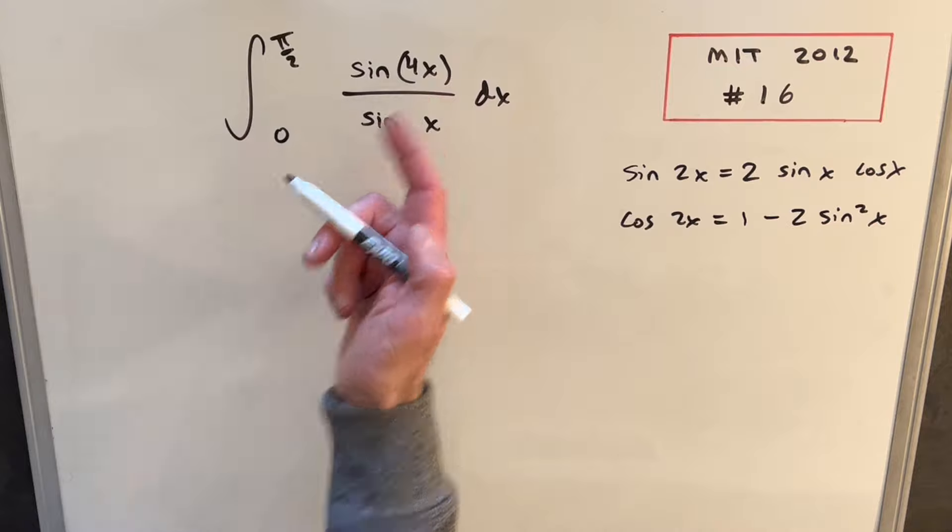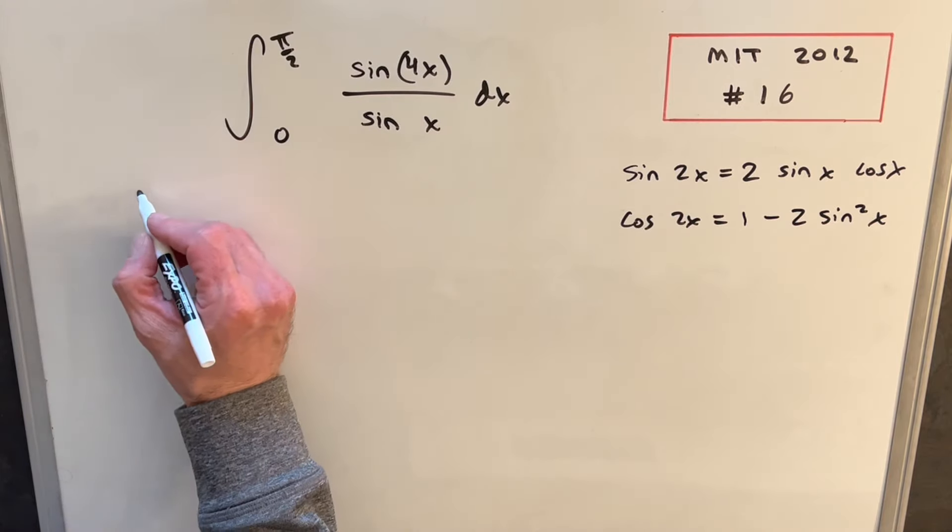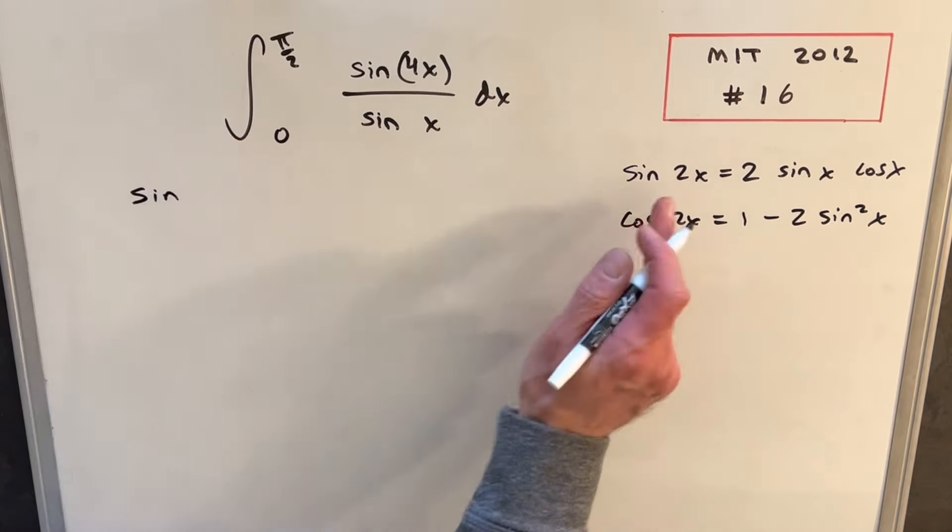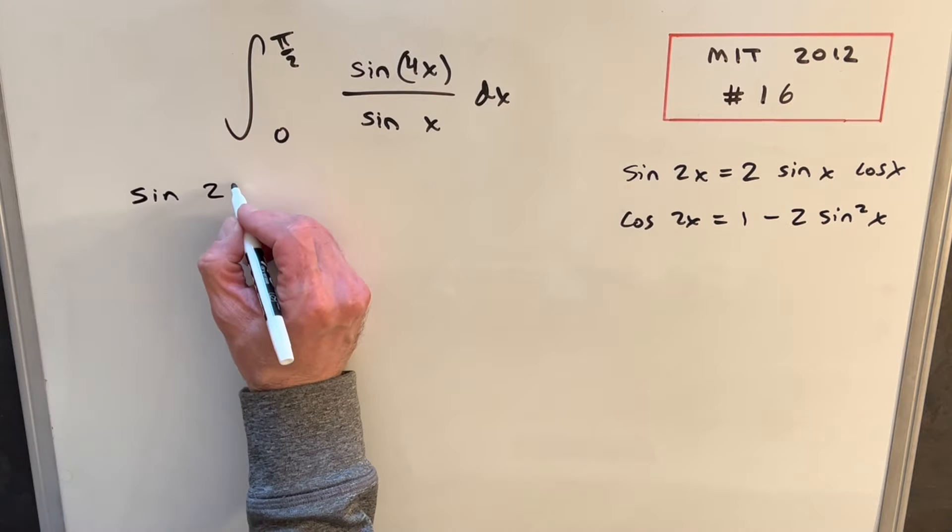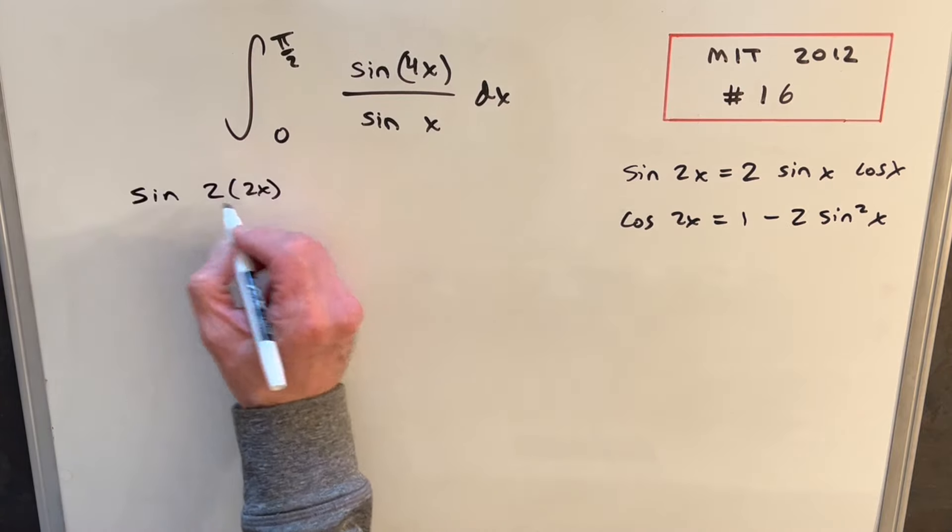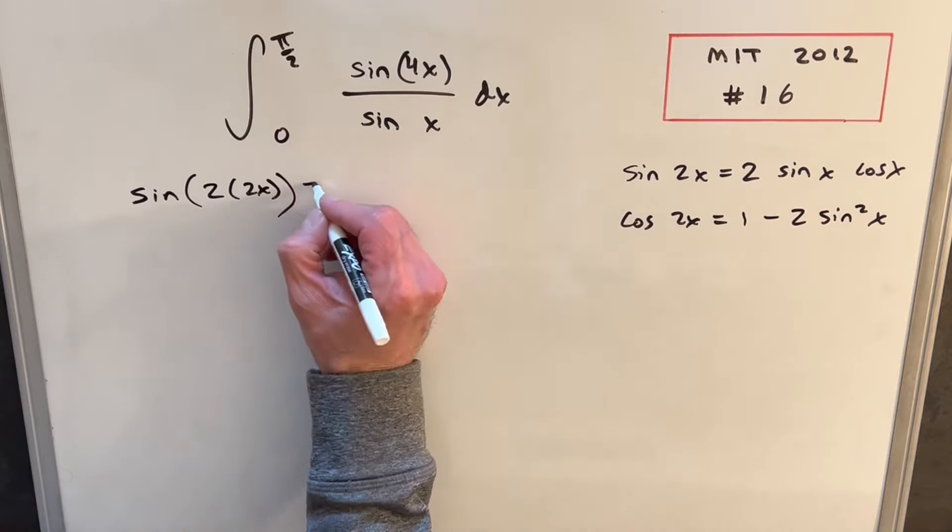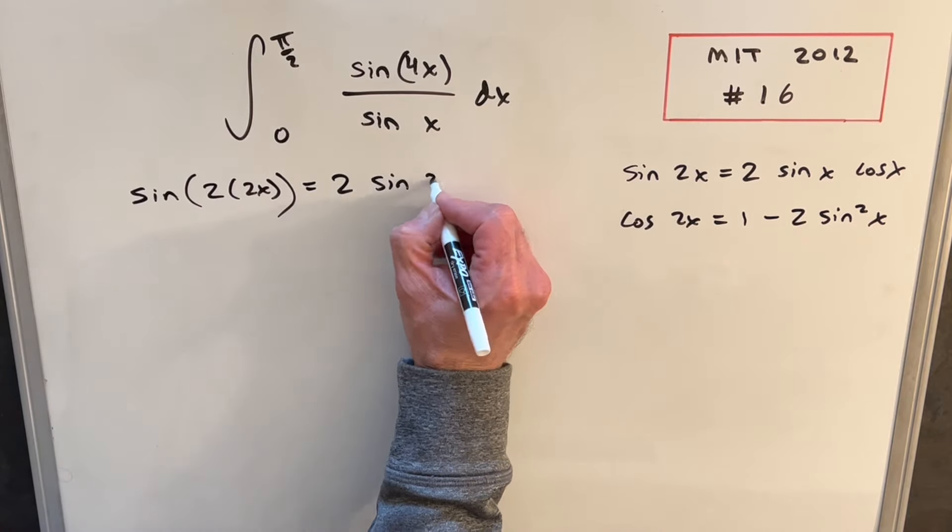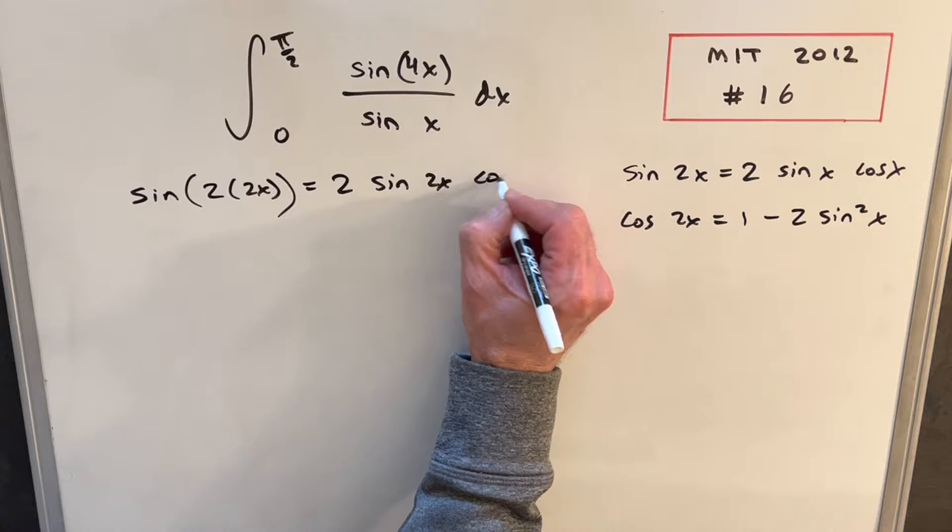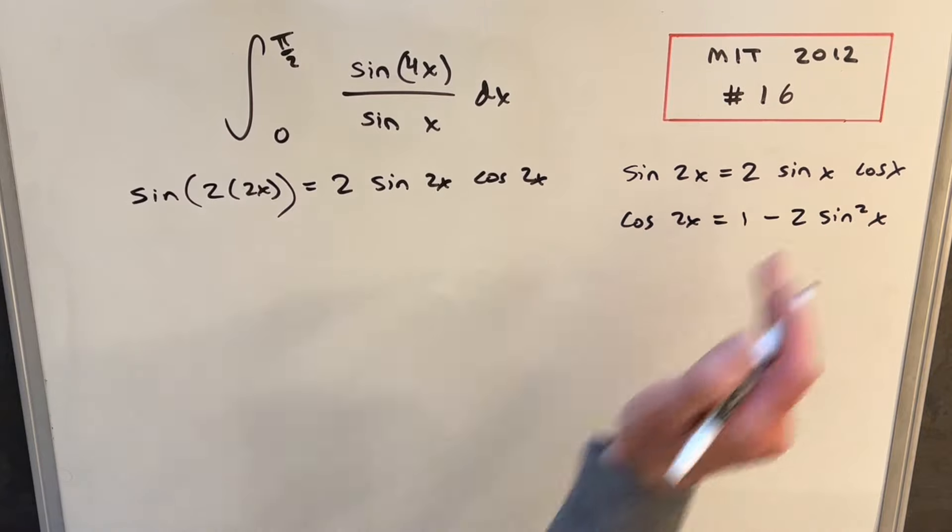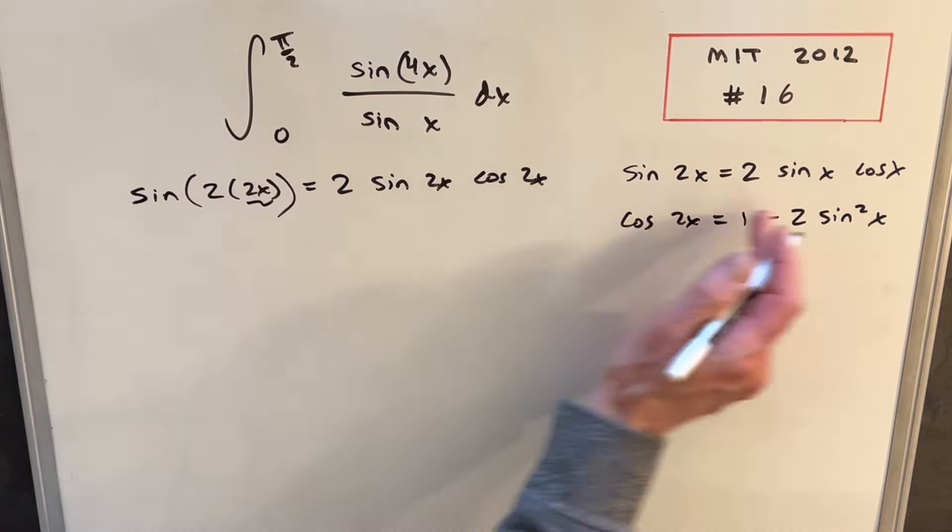So first let's just focus, our problem is the sine of 4x. But what I can do is I can write that and make use of our double angle formula, just writing it as 2 times 2x like this. Then using our formula, we'll have 2 sine 2x cos 2x, just matching this format where this is in the place of our x.